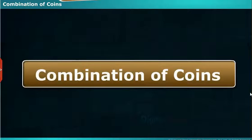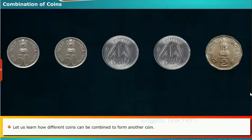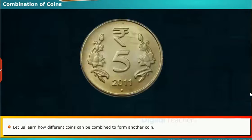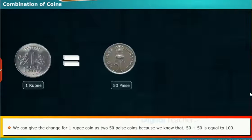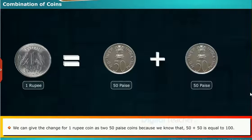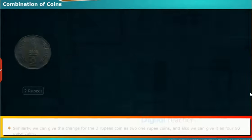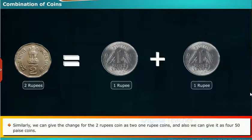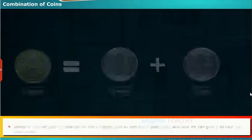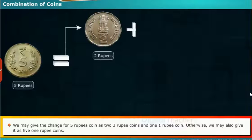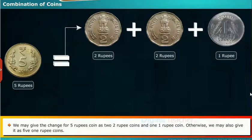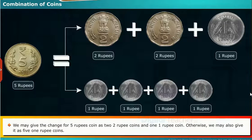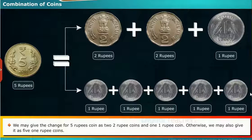Combination of coins. Let us learn how different coins can be combined to form another coin. We can give the change for 1 rupee coin as 2 fifty-paisa coins, because 50 plus 50 equals 100. Similarly, we can give change for a 2 rupee coin as 2 one-rupee coins, or as 4 fifty-paisa coins. We may give change for a 5 rupee coin as 2 two-rupee coins and 1 one-rupee coin, or as 5 one-rupee coins.